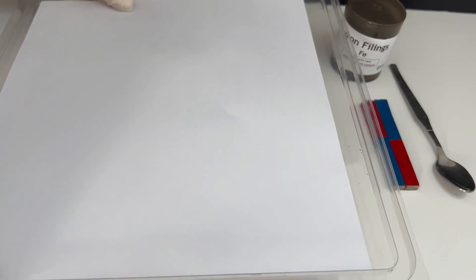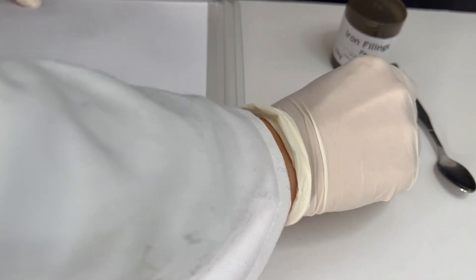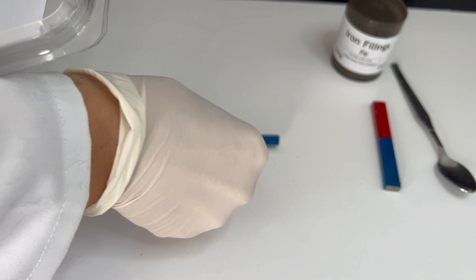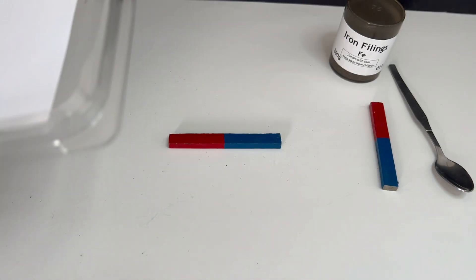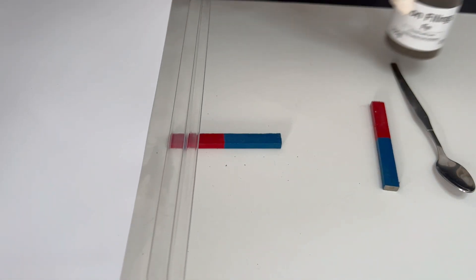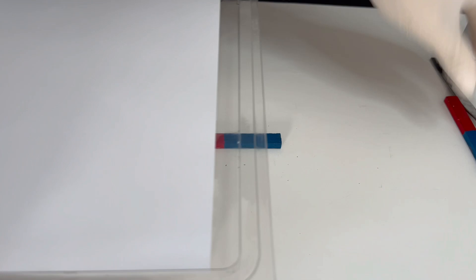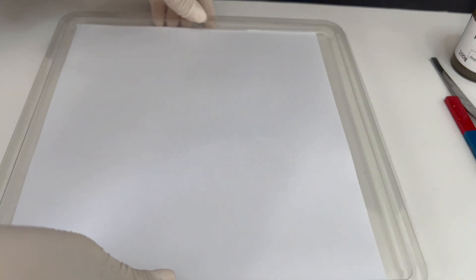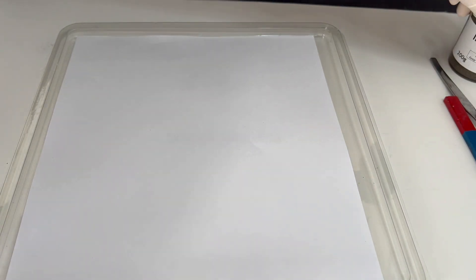First I place the bar magnet underneath the plastic tray. Then I put a sheet of white paper on top of the tray right above the magnet. Now I gently sprinkle the iron filings over the paper.